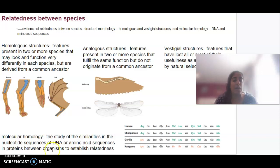For example, chimpanzees are more closely related to humans because they share more similar amino acid sequences than, say, a kangaroo and a human.